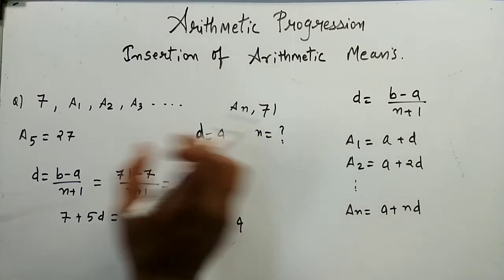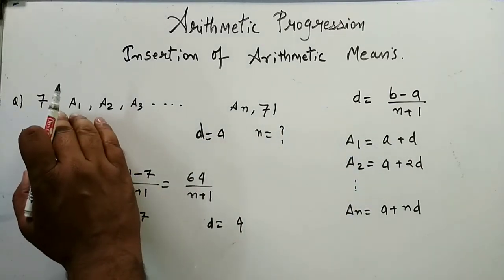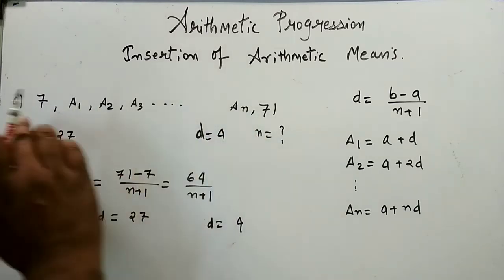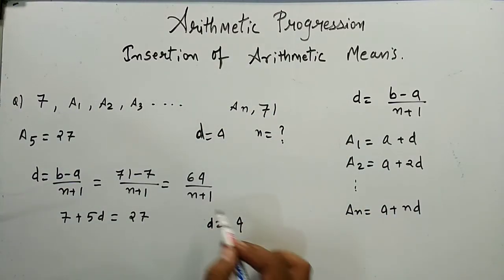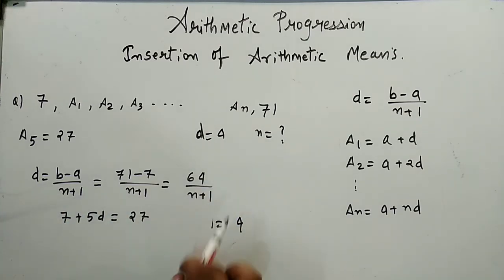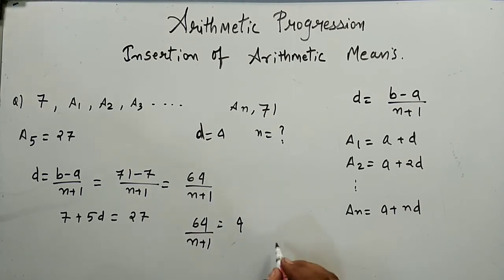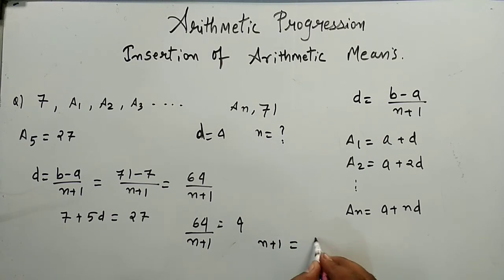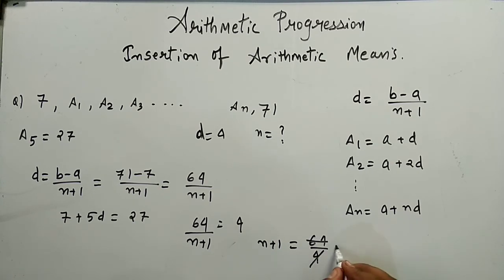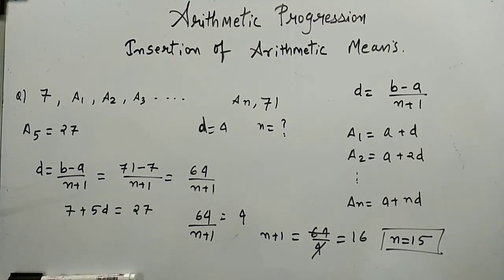Now we find the number of arithmetic means inserted. Since d = 64/(n+1) and d = 4, we get 4 = 64/(n+1), so n+1 = 64/4 = 16, and n = 15. These are some problems based on insertion of arithmetic means between two numbers. I hope this video is helpful for you all, and if you are new to my channel, don't forget to subscribe. Thank you so much.